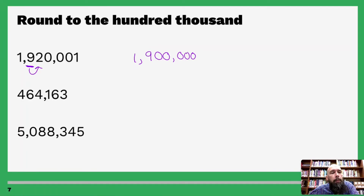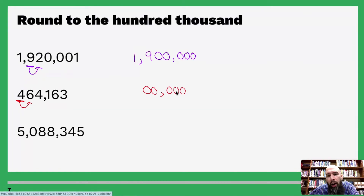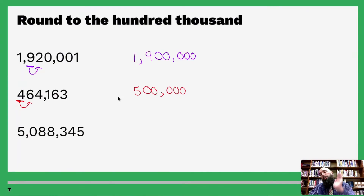Almost there — ones, tens, hundreds, thousands, ten-thousands, hundred-thousands. Underline four, look to the right — five or above, give it a shove! One, two, three, four, five zeros. Since six is five or above, we give four a shove and make it a five. Four bumps up to five — and this is five hundred thousand.